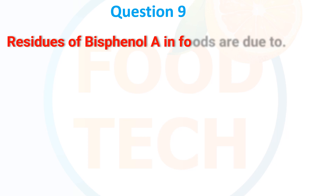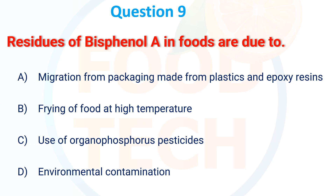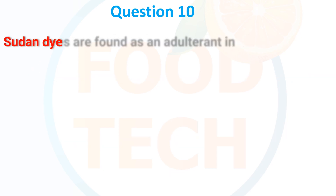Residual of Bisphenol A in foods is due to: A. Migration from packaging made from plastic and epoxy resin, B. Frying of foods at high temperature, C. Use of organophosphorus pesticide, D. Environmental contamination. The correct answer is migration from packaging made from plastic and epoxy resin.